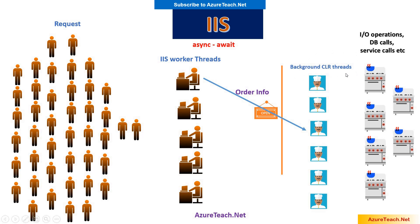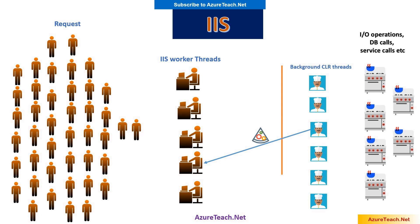These CLR threads are cheaper to create unlike IIS worker threads. Here if you see, the first IIS worker thread is delegating the task to a CLR thread — this is called context switching — and after delegating this work to the background CLR thread, it returns back to the pool. Once the background CLR thread finishes the operation, it returns the response to any IIS worker thread that is free. Note that the first IIS worker thread delegated the work, but the response is returned to a different IIS worker thread.